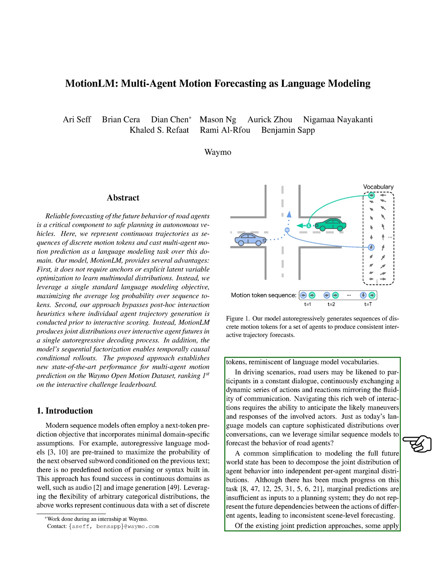A common approach to modeling the future state of the world is to break down the joint distribution of agent behavior into independent distributions for each agent. However, these marginal predictions are not sufficient for a planning system as they don't account for the future dependencies between the actions of different agents, leading to inconsistent forecasting.